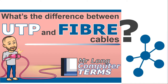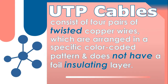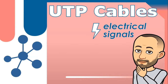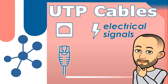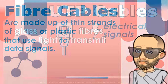What's the difference between UTP and fiber cables? In computing, there are two main types of cables used to connect devices together: unshielded twisted pair, also referred to as UTP, and fiber optic cables. UTP cables consist of four pairs of twisted copper wires arranged in a specific color-coded pattern and do not have a foil insulating layer. UTP cables use electronic signals to transmit data, and an RJ45 connector is attached so the cable can be inserted into a network port.